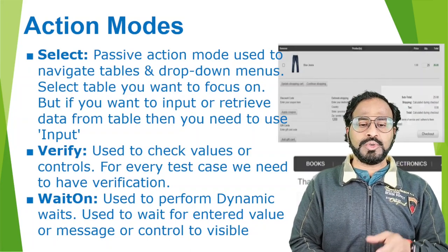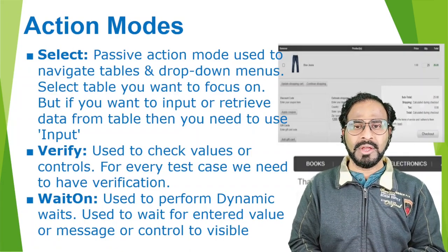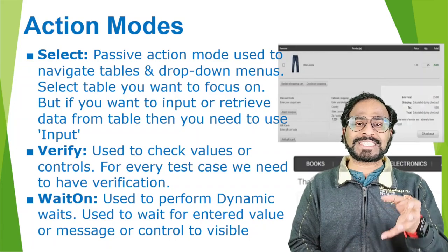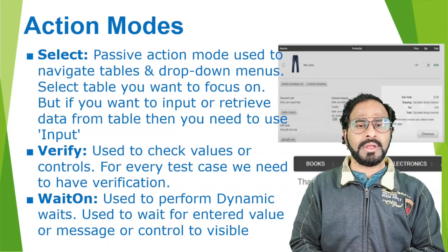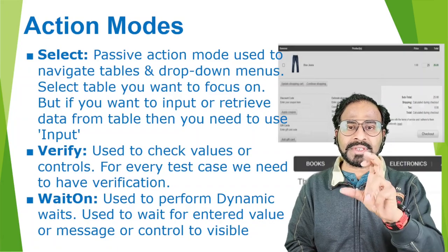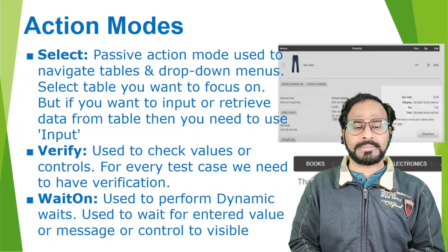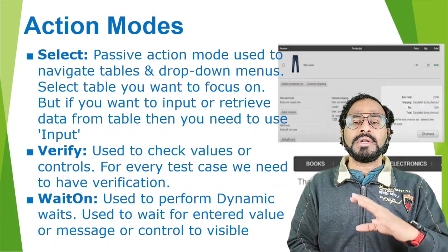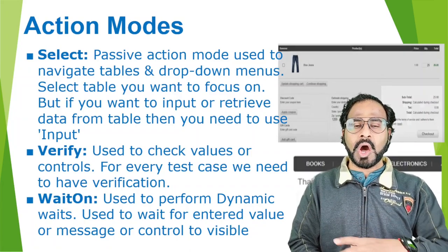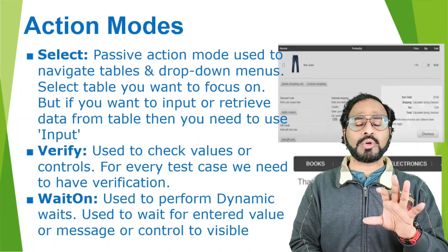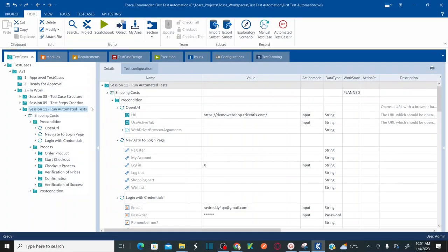Wait on is used to perform dynamic waiting instead of static waiting. When you use static wait — like 10, 20, or 30 seconds — those are hard-coded values. We need to avoid hard-coded values. For example, if you want to wait until elements are loaded on the page or until a message appears on screen, you use wait on. This is a very important action mode to improve your test case automation.